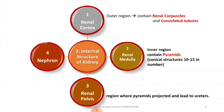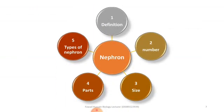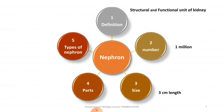The fourth and most important point is the nephron. We will study five things about the nephron: first, the definition; second, the number; third, the size; fourth, the parts; and fifth, the types. The nephron is the structural and functional unit of the kidney. The number of nephrons is one million, and the size is about 3 centimeters.